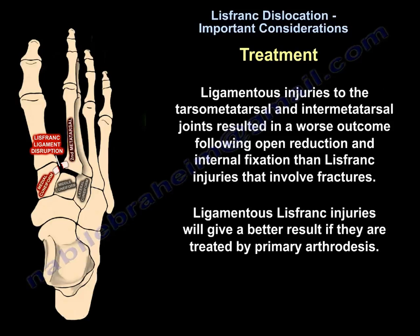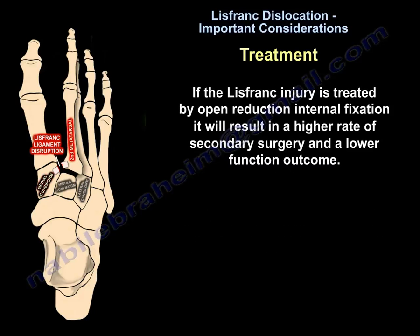Ligamentous injuries to the tarsometatarsal and intermetatarsal joints result in a worse outcome following open reduction and internal fixation compared to Lisfranc injuries that involve fractures. Ligamentous Lisfranc injuries give a better result if treated by primary arthrodesis. If a ligamentous Lisfranc injury is treated by open reduction and internal fixation, it results in a higher rate of secondary surgery and a lower functional outcome.